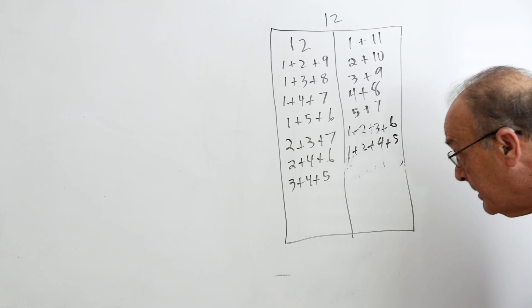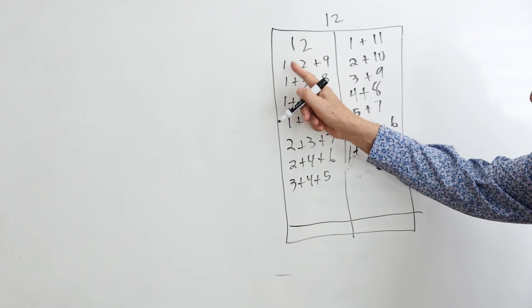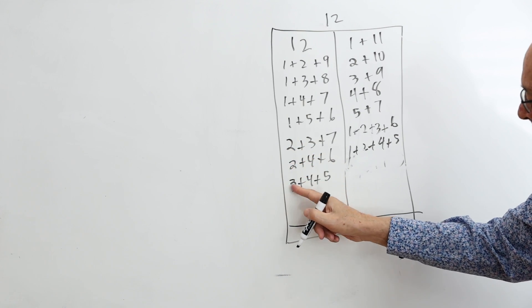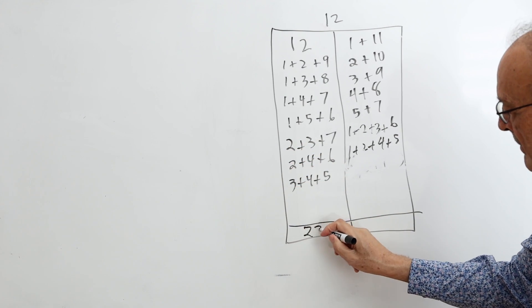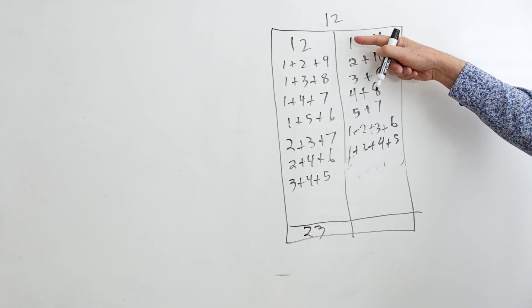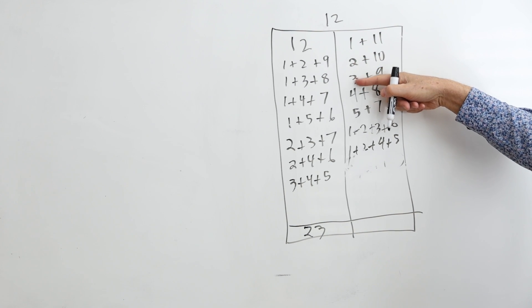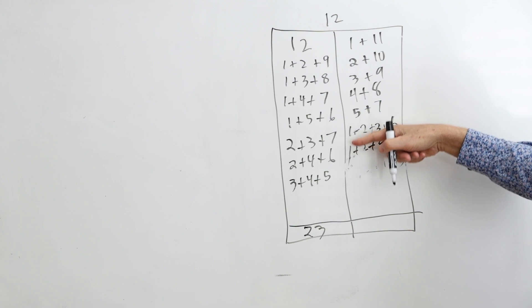So let me try adding the first numbers. 12, 13, 14, 15, 16, 18, 20, 23. And this would be 1 plus 2 is 3, plus 3 is 6, 10, 15, 16, 17.